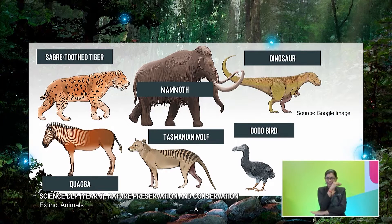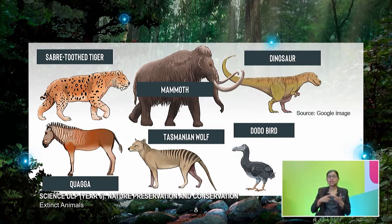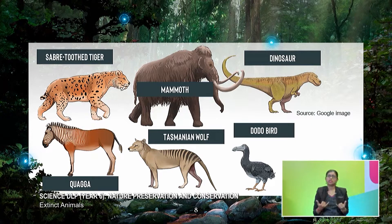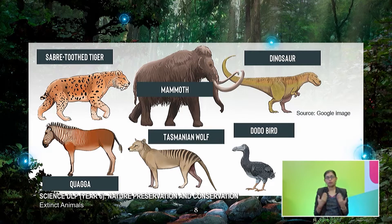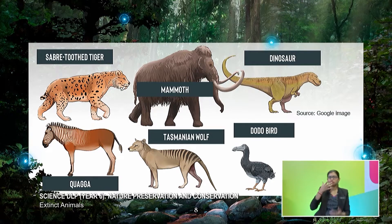And then the quagga. If you look at the quagga, it looks like a hybrid — the front part is like a zebra, and the hind part is like a horse. But they are now extinct; we will never find them alive on Earth anymore. And then we also have the Tasmanian wolf. The front part looks like a wolf, but the hind part has stripes like a tiger, so sometimes it is also known as the Tasmanian tiger. It's the same animal.